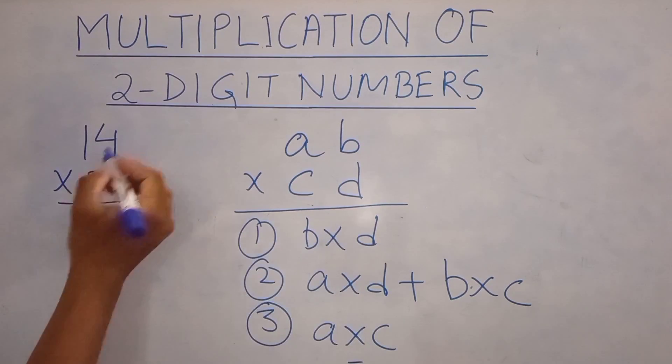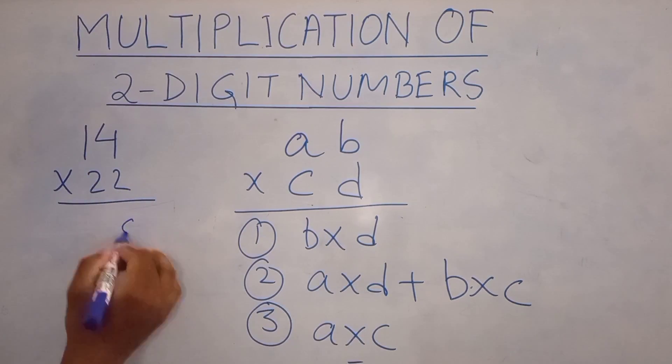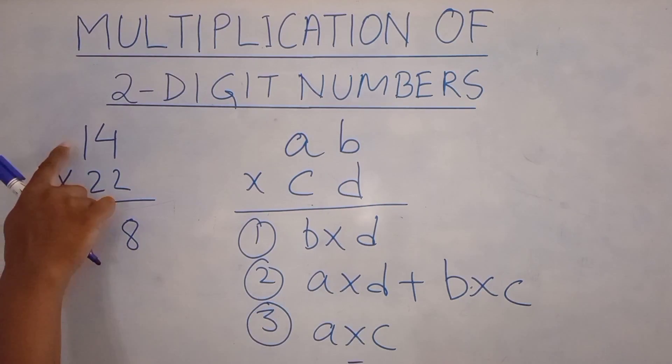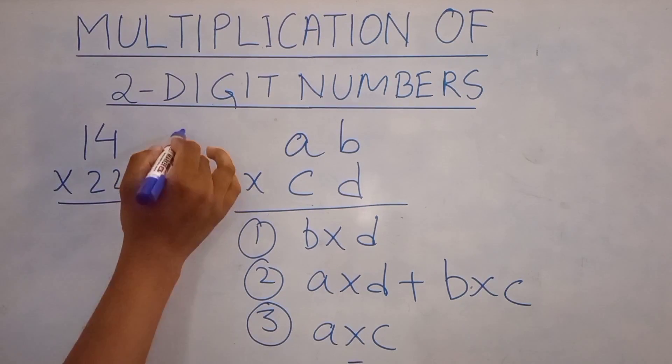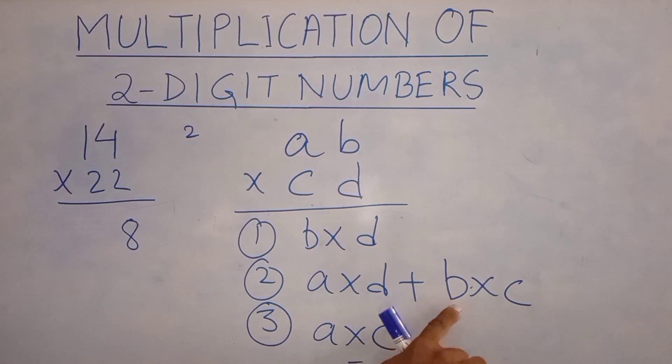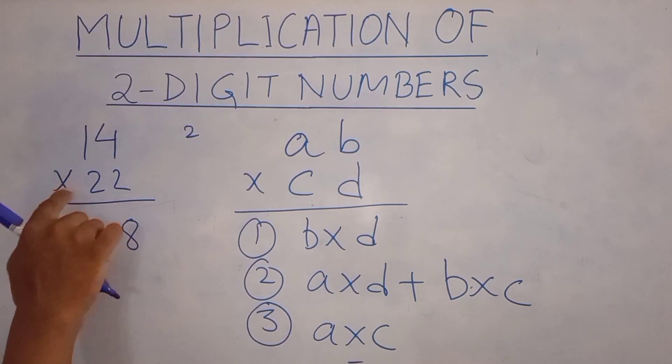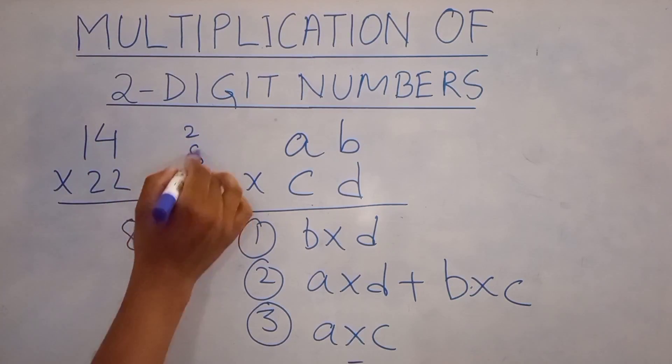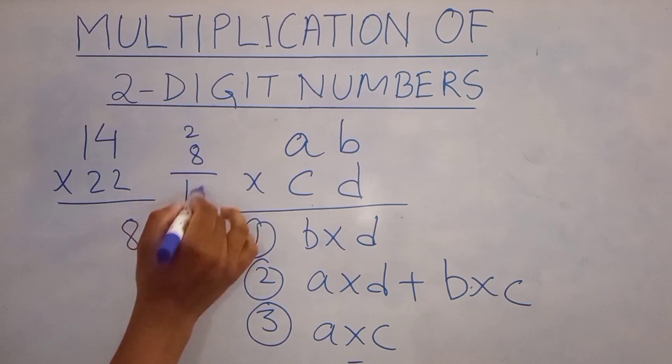So B into D: 4 into 2 will give you 8. A into D which is 1 into 2 plus B into C: 2 into 4 which is 8. So 8 plus 2 gives us 10.